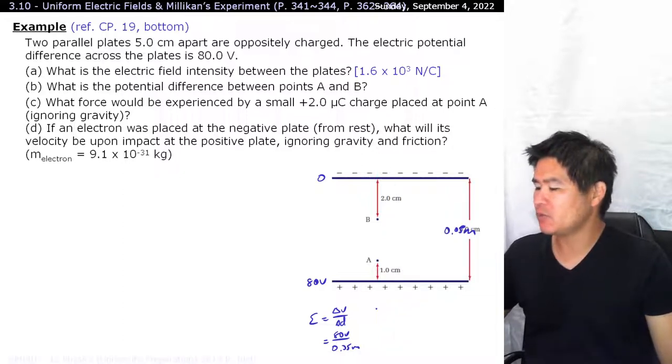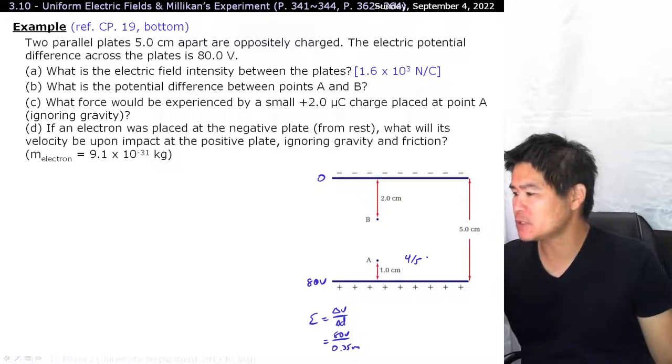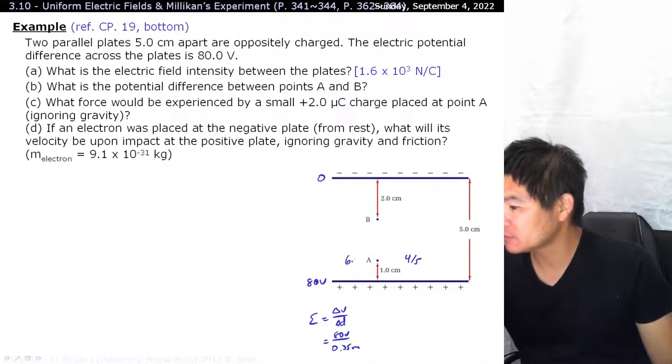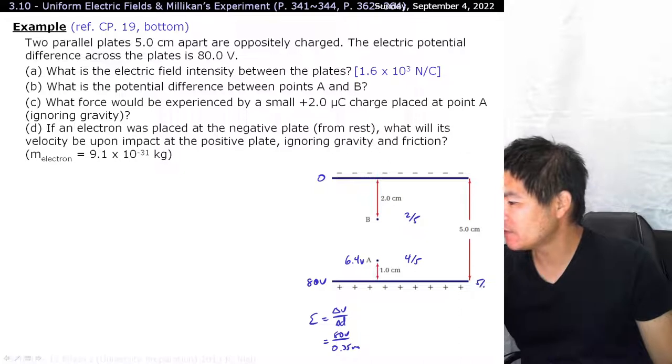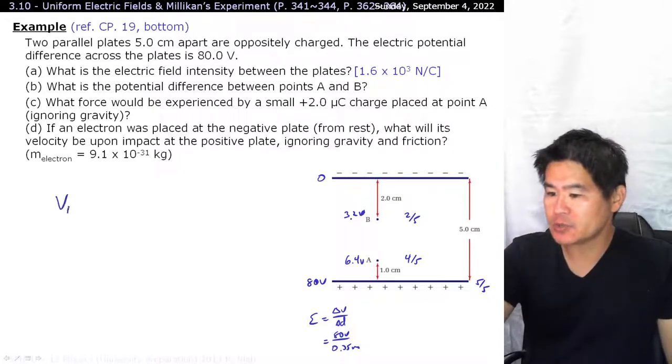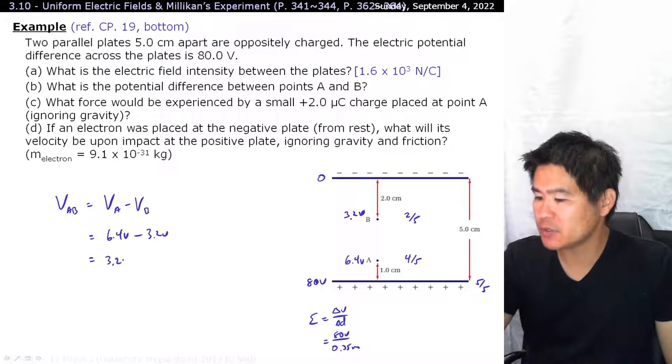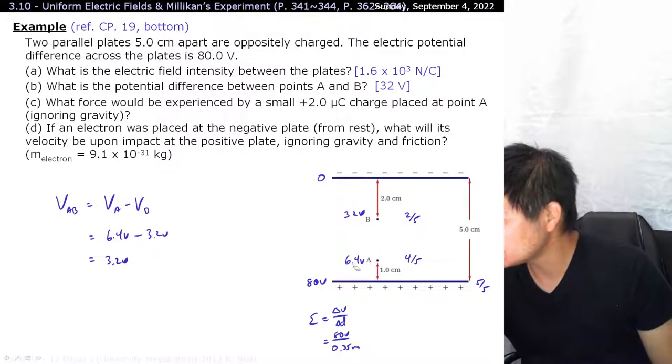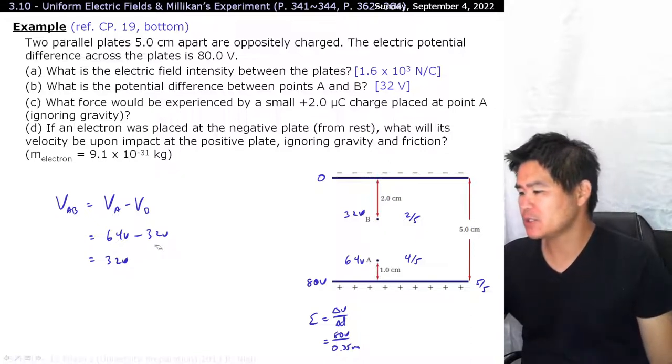What is the potential difference between point A and point B? Well, if this is a total of 5 centimeters over here, then over here, this is 4 fifths along the way. So 4 fifths of 80 volts is equal to 64 volts. And if we look at point B, then this is 2 fifths of the way. 2 fifths is equal to 40%, and 40% of 80 is 32 volts. So if you really want to look at the voltage between A and B, that's equal to the voltage at point A subtract the voltage at point B. So that's equal to 64 volts minus 32 volts, which will give you 32 volts.